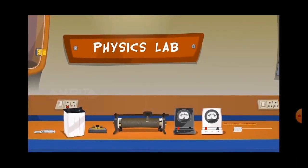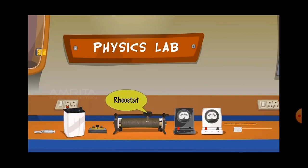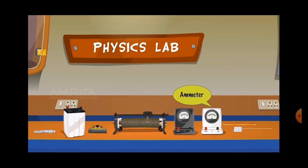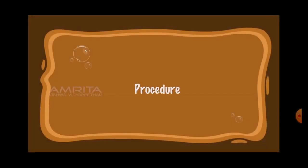Material required: here you can see in the physics lab — the first one is the screw gauge, which you have used in standard 11. Then a battery or battery eliminator, a one-way key, a rheostat, a voltmeter, a variable rheostat, an ammeter, a meter scale, and the resistance wire.